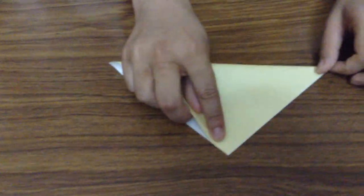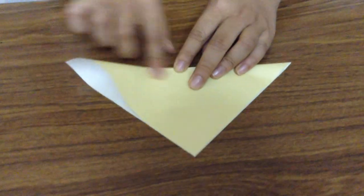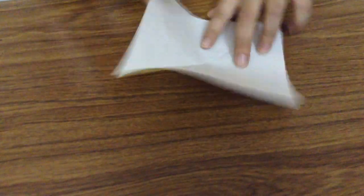So you start with a square sheet of paper, and you fold it in half like this. Then the other way.